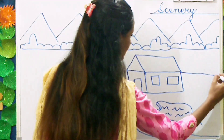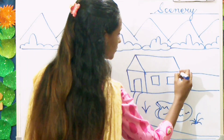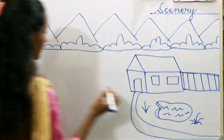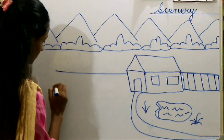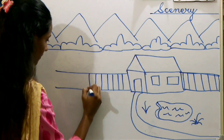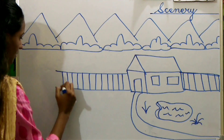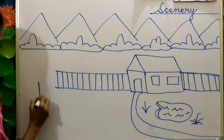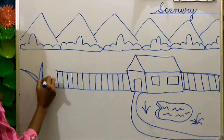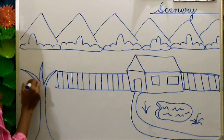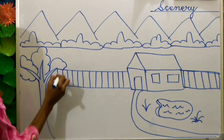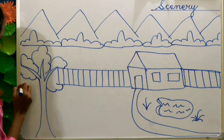Next step, we are going to make the fence around the house. For this you need to draw two straight lines, here also straight lines for the fence. Now before we continue, we are going to draw a tree, and then we will continue with the fence.